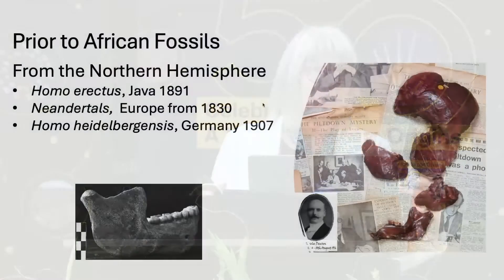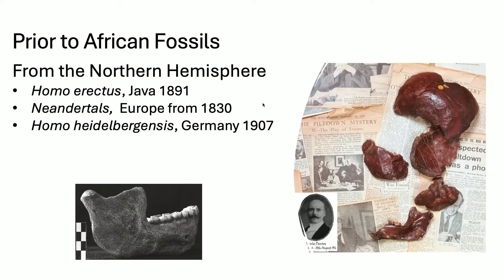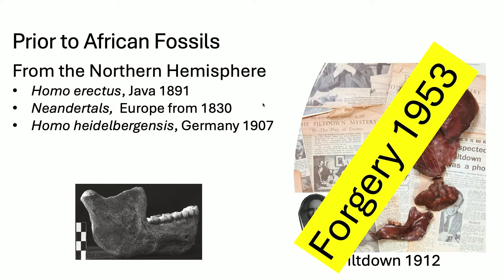Prior to African fossils, in the northern hemisphere we knew about Homo erectus, Neanderthals, and Homo heidelbergensis. Britain had its own fossil — Piltdown — found at the site of Piltdown: several pieces of a human skull combined with what we now know was an orangutan mandible, which turned out to be a hoax. That forgery wasn't even discovered until 1953.